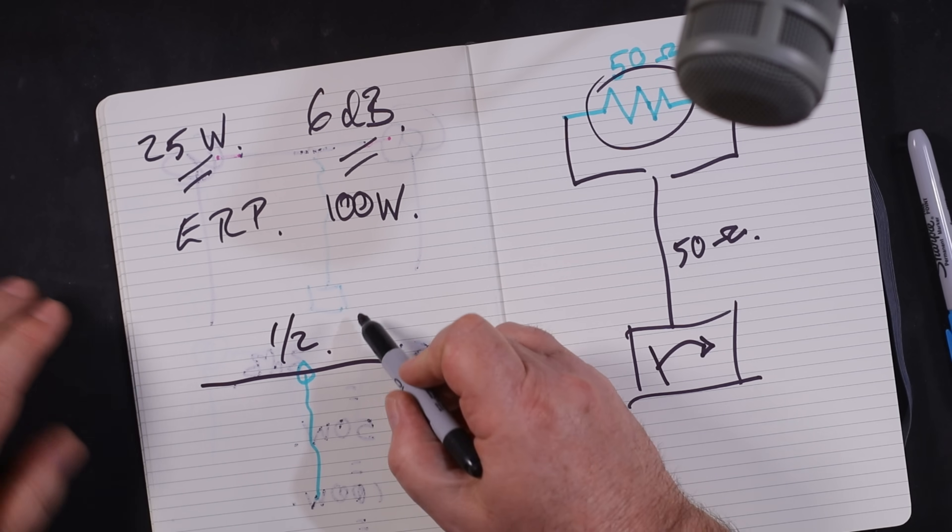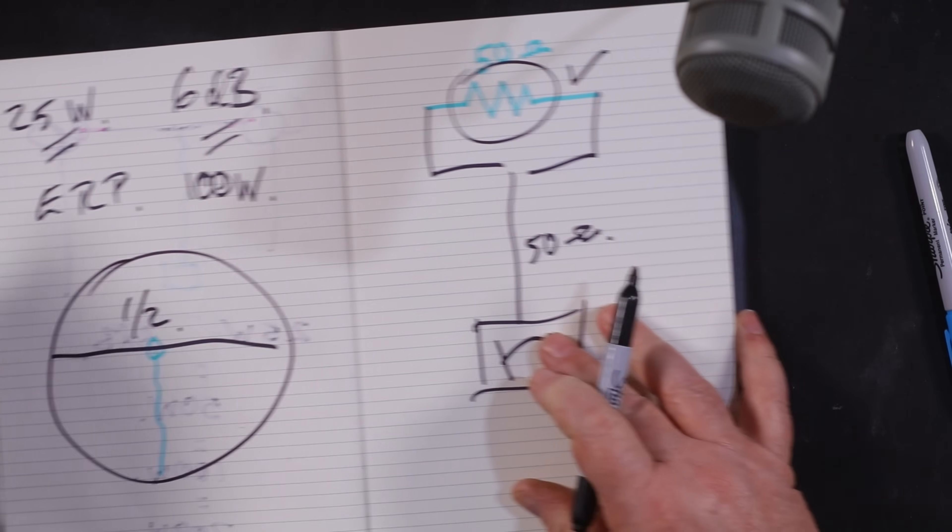Now normally we won't have a 50 ohm resistor there. We'll have an antenna, so our RF would leave the antenna - this one here - our half wavelength dipole in this case. All manner of antennas, and I did a few antennas on this video here. So go and watch that video if you're interested in a few simple antennas.